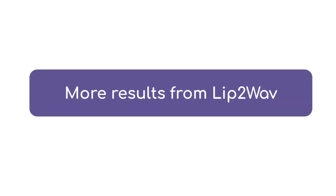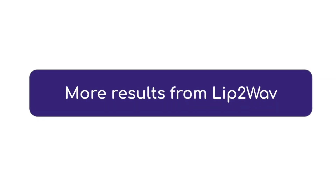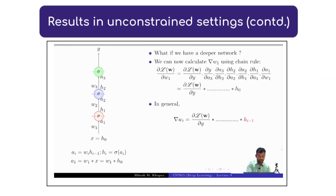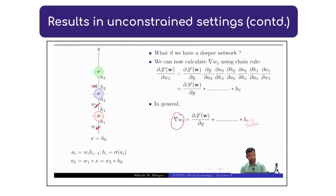Let us look at some more results from our Lip2Wave model. In any of these weights, w1, w2, w3, the gradient formula will have HL in this point. What is HL minus 1? Input from the previous layer. And H0 is the actual input. So the gradient in any layer is actually supposed to be the input from the previous layer.